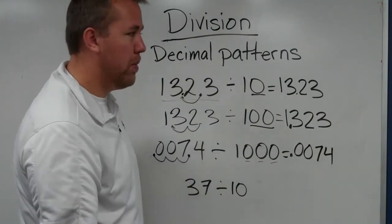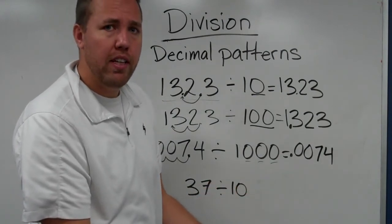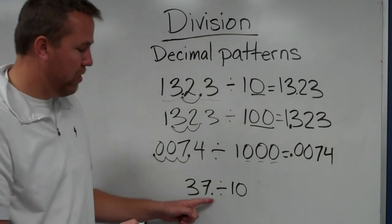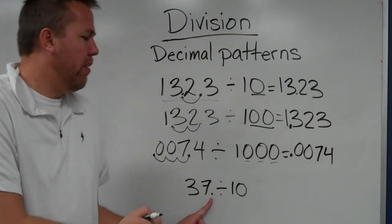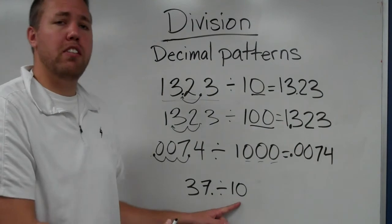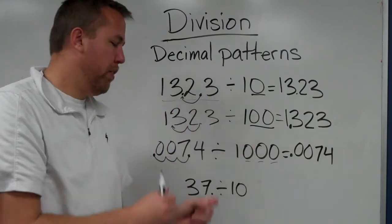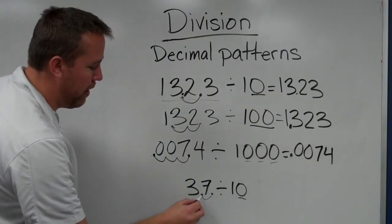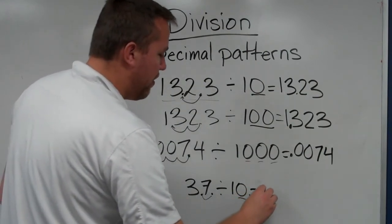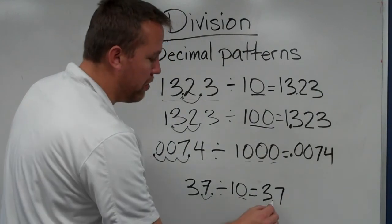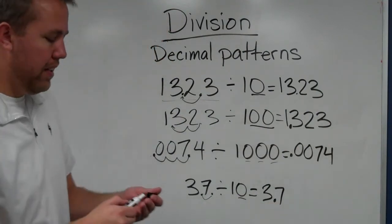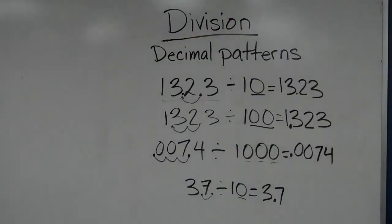Remember, in whole numbers, they all have decimal points, they're just hiding. I like to say they're hiding in their pockets. So, 37 whole, the decimal point's right there. If I'm dividing by ten, I need to move the decimal to the left. One zero means one place, and I would just bring it right there. So, 37 divided by ten equals 3.7. And that is decimal patterns with division, moving the decimals to the left.